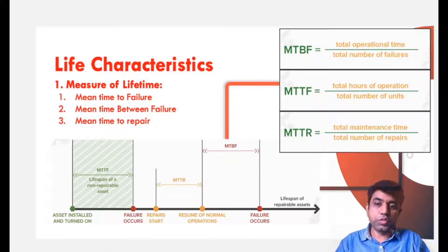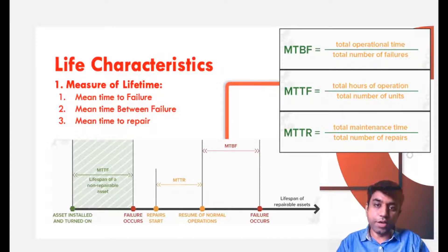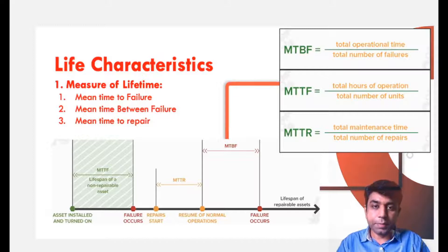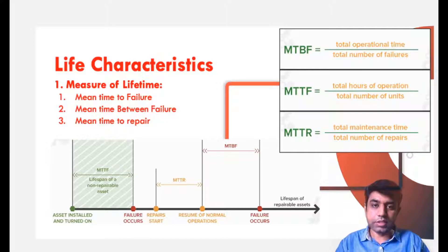The first one is measurement of life. In the case of measurement of life of any product, we need to understand three different terms: the first one is mean time to failure, the second one is mean time between failure, and the third one is mean time to repair. From the name itself, we get a judgment of what each actually means, but let us understand the concept fundamentally.